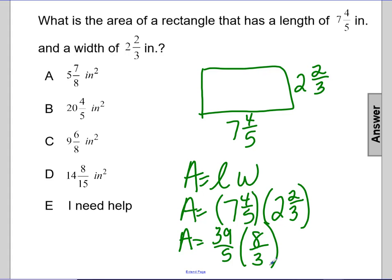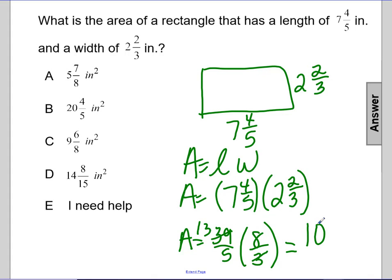Before I multiply these out, I see that I can cross-simplify. So now, when I multiply it across, I get one hundred and four over five.